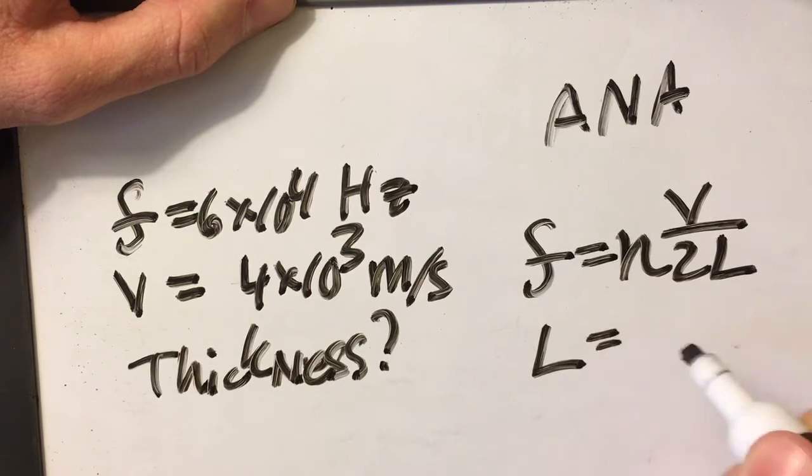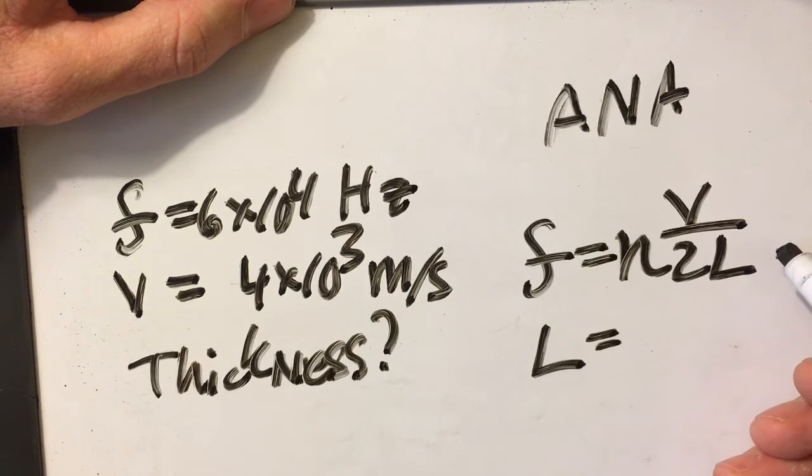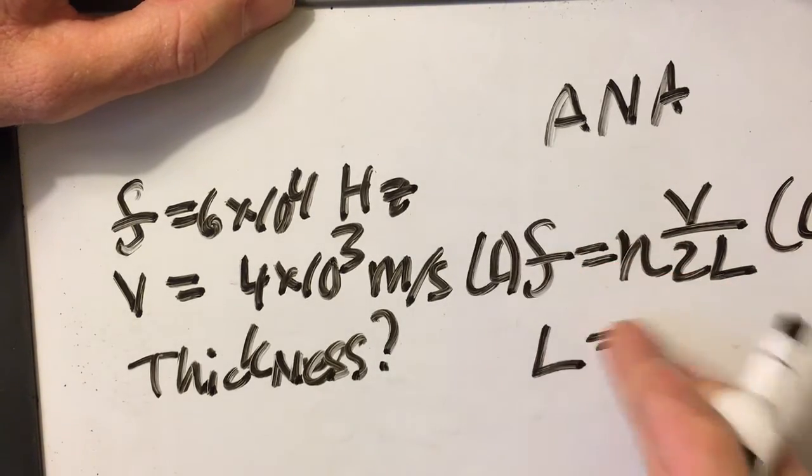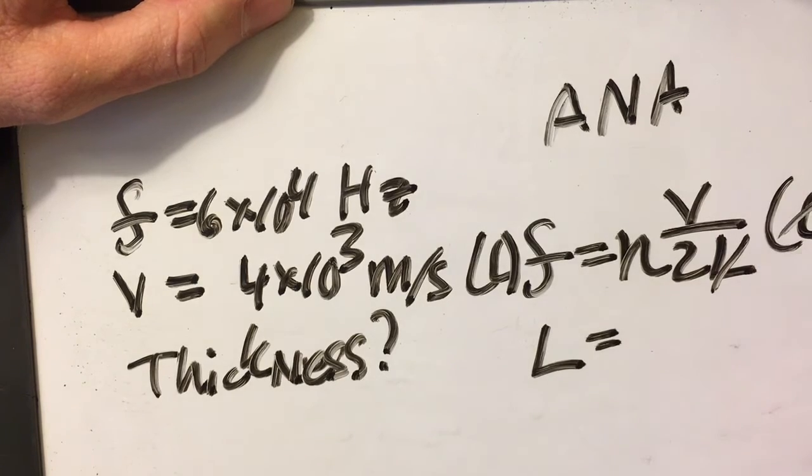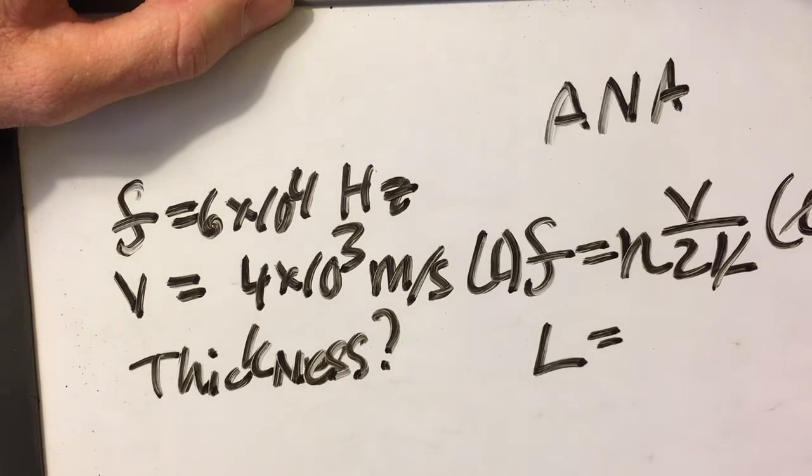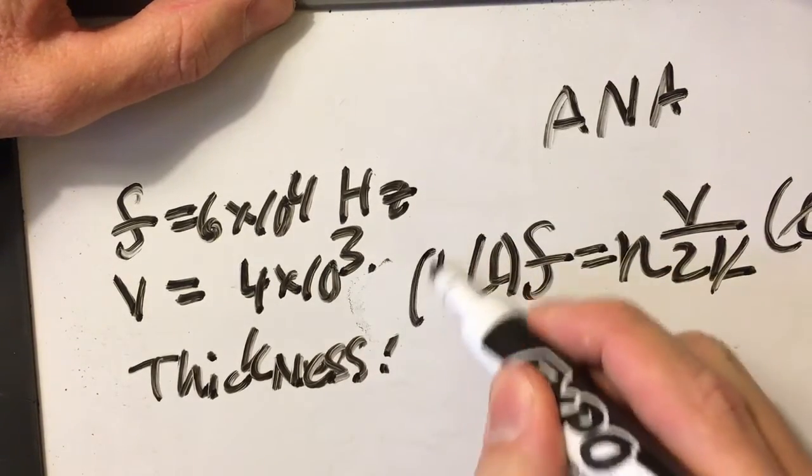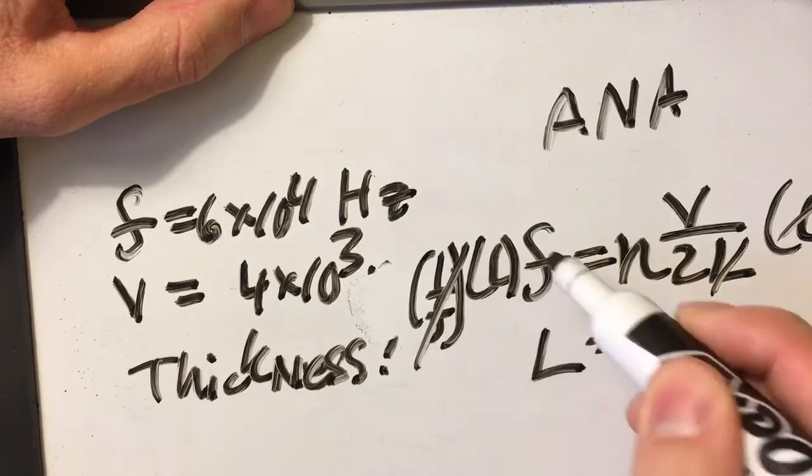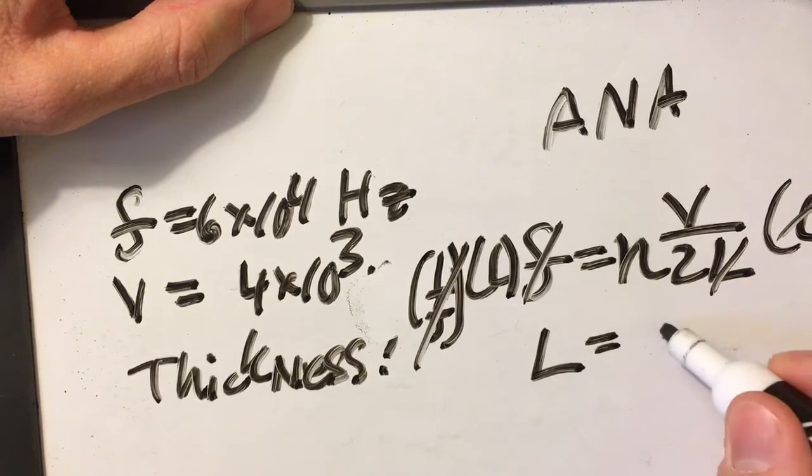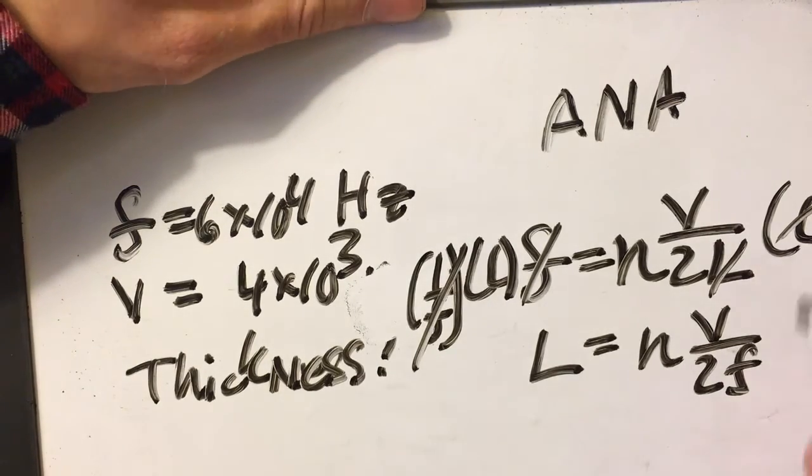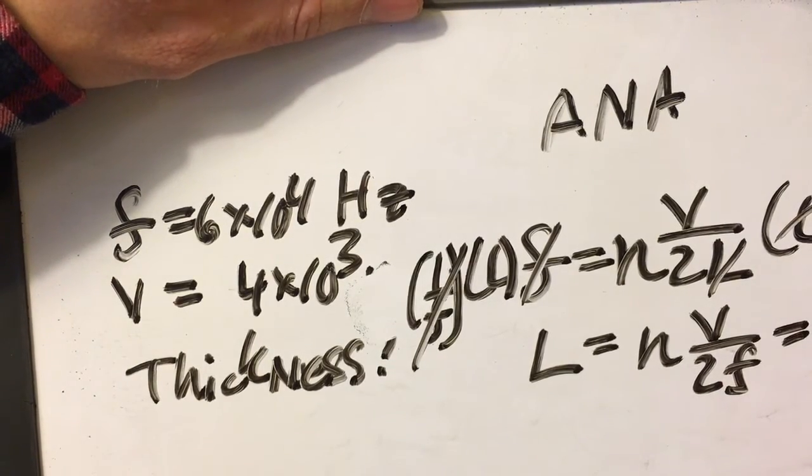Which is actually pretty simple. We just multiply both sides by L and divide both sides by frequency. So we can cross that out here. We're going to be multiplying both sides by one over the frequency so that we can cross the frequency out. So we get L equals nV over 2 frequency. And then it's as simple as plugging stuff in.